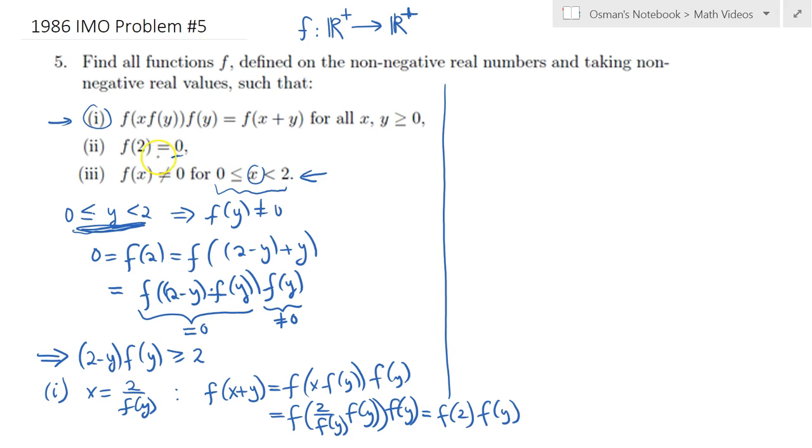But wait, f of 2 is simply equal to 0 from the second condition, so this whole thing, so this guy is 0, so this whole thing is equal to 0. So f of x plus y will only be 0 if the inside of it, the domain inside, and x plus y itself is not less than 2, right? Because under the third property, if it's less than 2, that can never be equal to 0, right? So therefore, so following from this second column here, it implies that x plus y is greater than or equal to 2.